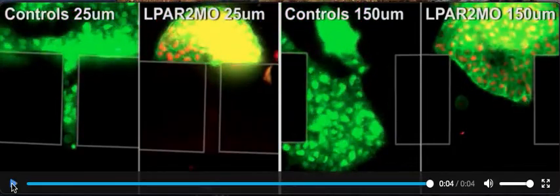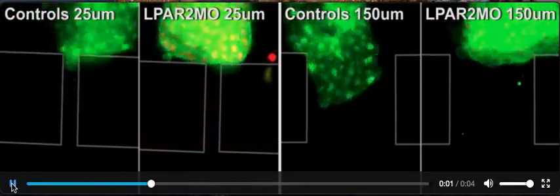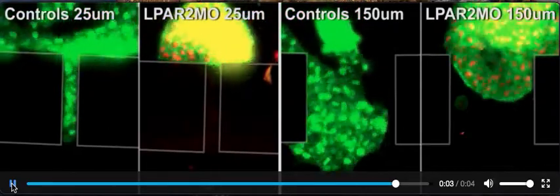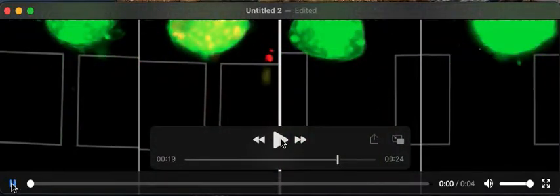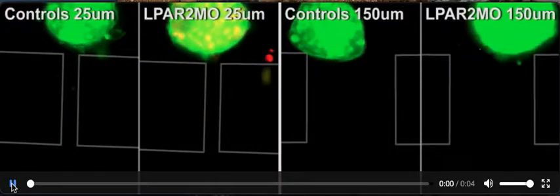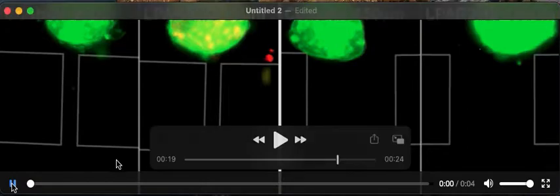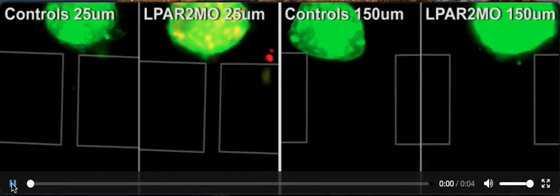You can see the cells going through the tunnels. Let's pause right there for a second. What we can see is that the cells in the control explants were capable of invading all the channel widths. This indicates that there's substantial cell rearrangement taking place.